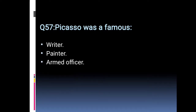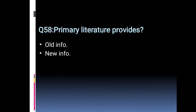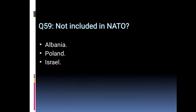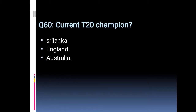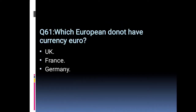Picasso was a famous writer, painter, or armed officer? You should also learn general knowledge, synonyms, and antonyms as they are included in the AKU paper. Primary literature provides old information or new information? Which European country does not have the currency euro?